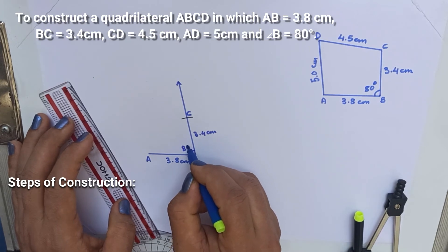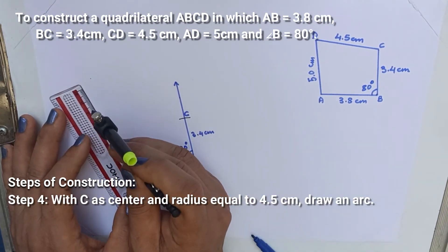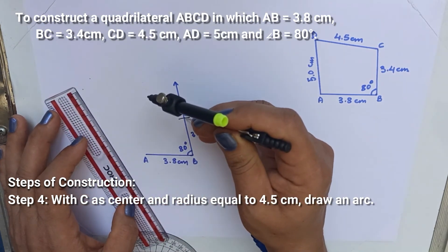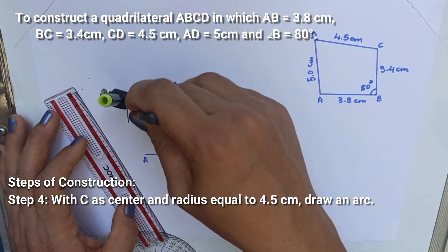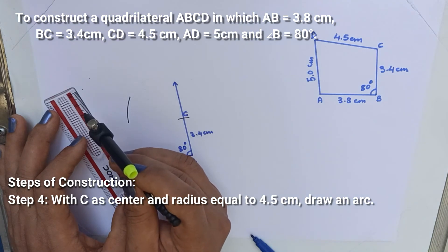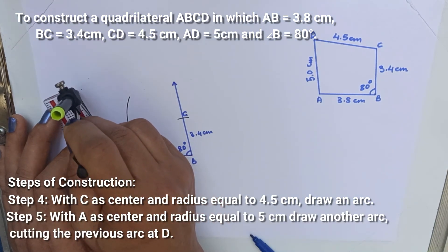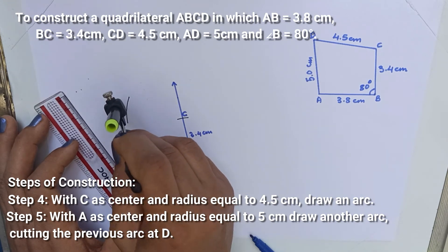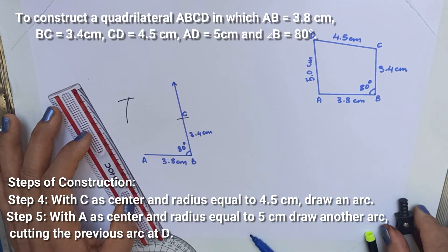Now with C as center and radius equal to 4.5 cm, draw an arc cutting the previous arc. And with A as center and radius equal to 5 cm, draw another arc cutting the previous arc.